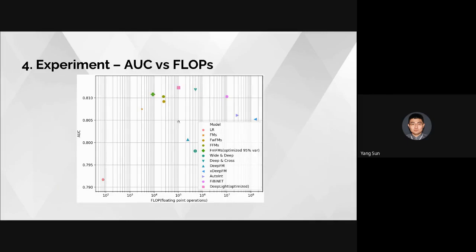This diagram shows model performance in AUC versus model speed in FLOPs. Our FM-Square model (the green point) sits in the middle-upper region, representing the best trade-off among all recommender algorithms. It takes about four times the FLOPs of the original FM but achieves much higher AUC. It's also faster than FWFM and FFM with less inference time, and faster than most DNN models while achieving comparable performance — except for DeepLight and Deep and Cross.